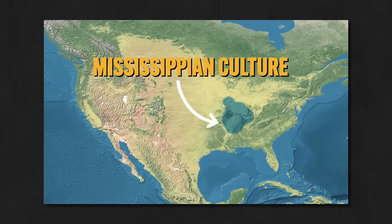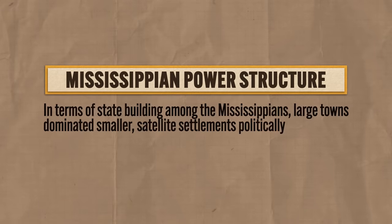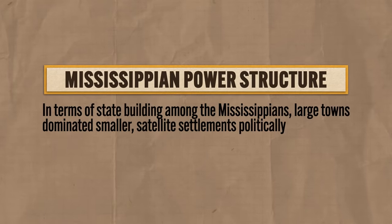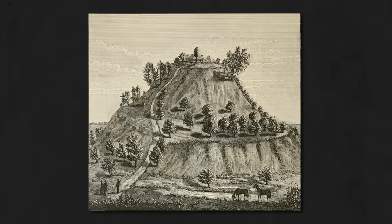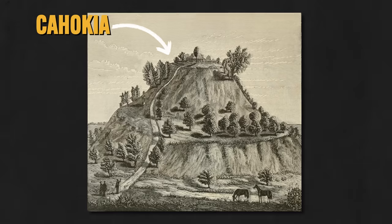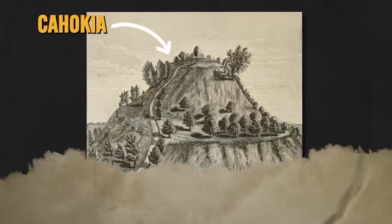Now let's consider one other major civilization — the Mississippian culture, which was the first large-scale civilization in North America. It grew up around the Mississippi River Valley, and because the soil there was fertile, they focused on agriculture. In terms of state building, large towns dominated smaller satellite settlements politically. They were known for their monumental mounds around which their towns were organized. The largest is a series of about 80 human-built burial mounds constructed by the Cahokia people, part of the Mississippian culture, the largest of which is almost 100 feet tall.